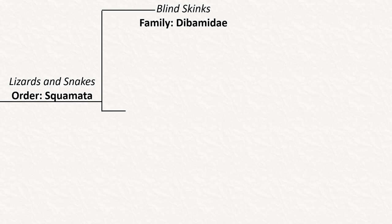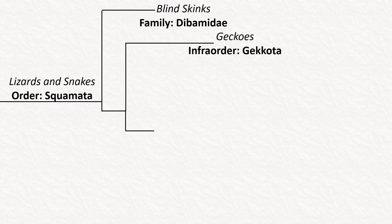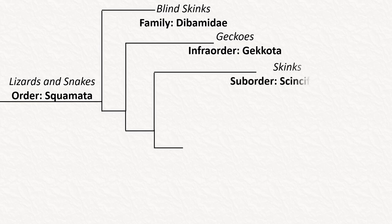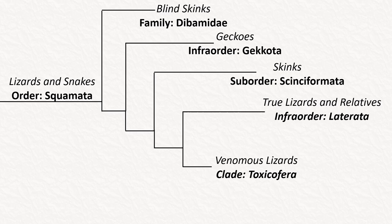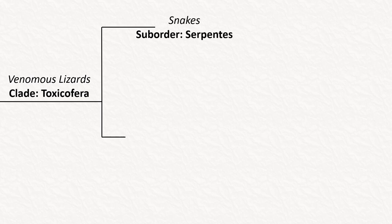To recap a small part of that previous video, these are the main groups of squamata. The blind skinks are the most ancestral lineage of squamates, but then the phylogeny diverges into the geckos, the skinks, and the so-called true lizards. The rest of squamata is lumped together in the last clade, known as Toxicofera. This name is slightly misleading, as not all of the animals in this clade have venom, although the only squamates known to have venom are indeed a part of it. Zooming into the phylogeny of Toxicofera, the first group is the suborder Serpentes, or the snakes.